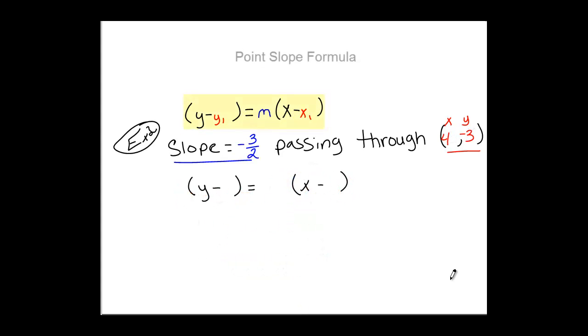In example 2, we have a slope that equals negative 3 over 2 and it passes through the points 4 and negative 3. So let's plug our slope into the equation, negative 3 over 2, and then plug in our point. Our y is negative 3 and our x is 4, and then solve.